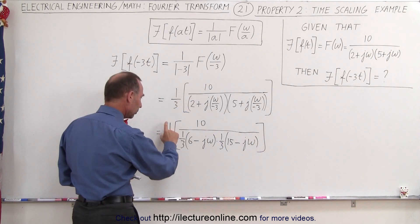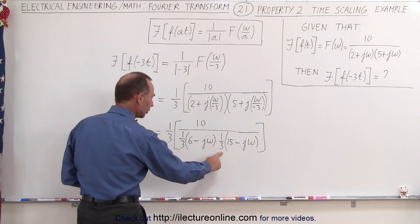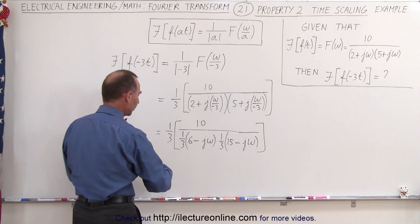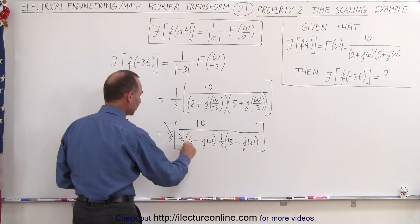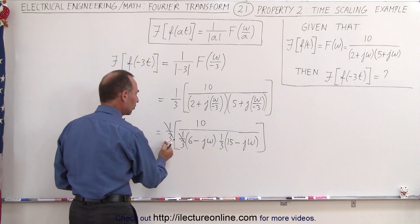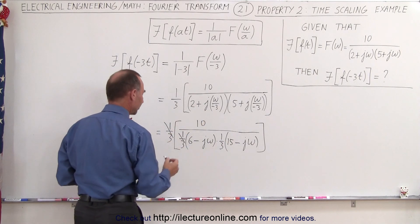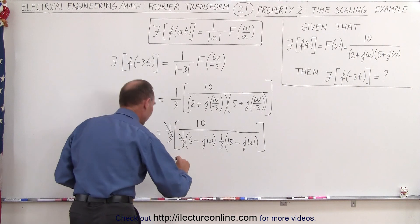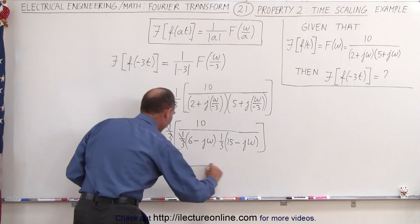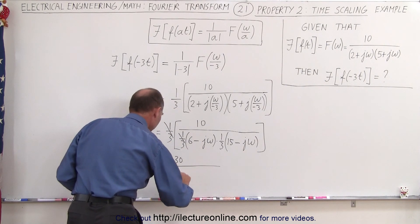We have a 1 third in the numerator, we have 1 third in the denominator and 1 third in the denominator. So this 1 third will cancel out one of these and this 1 third comes out which is in the denominator which then can get the reciprocal taken and that makes 3 times 10 or 30 divided by 6 minus j omega times 15 minus j omega.